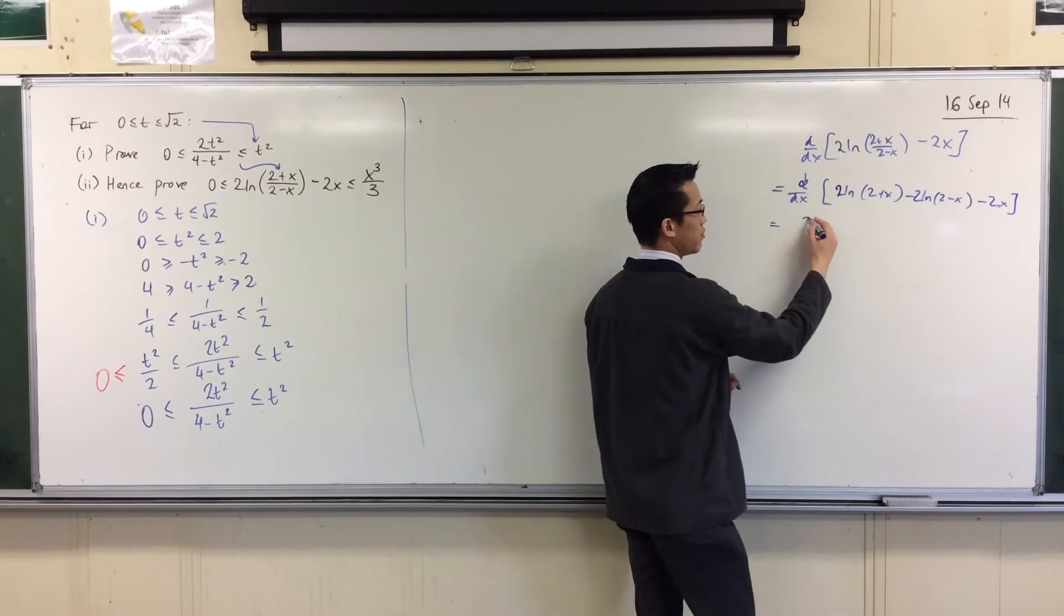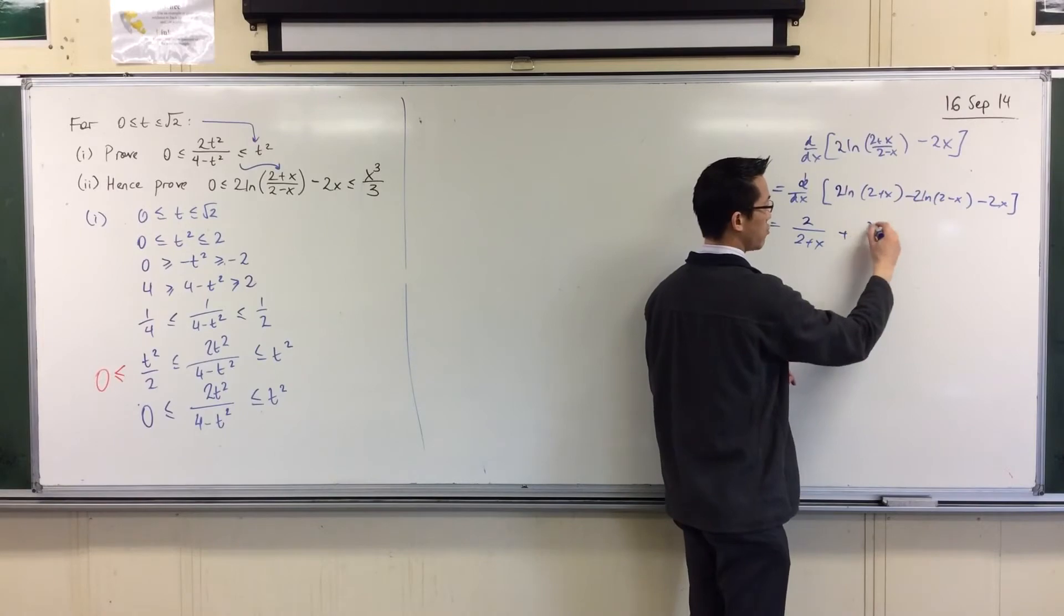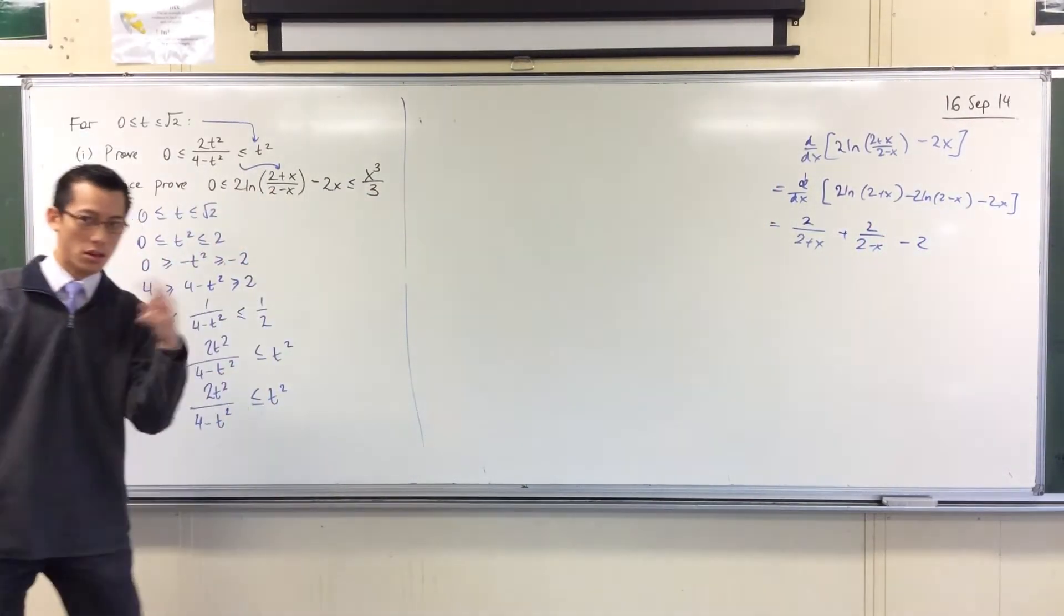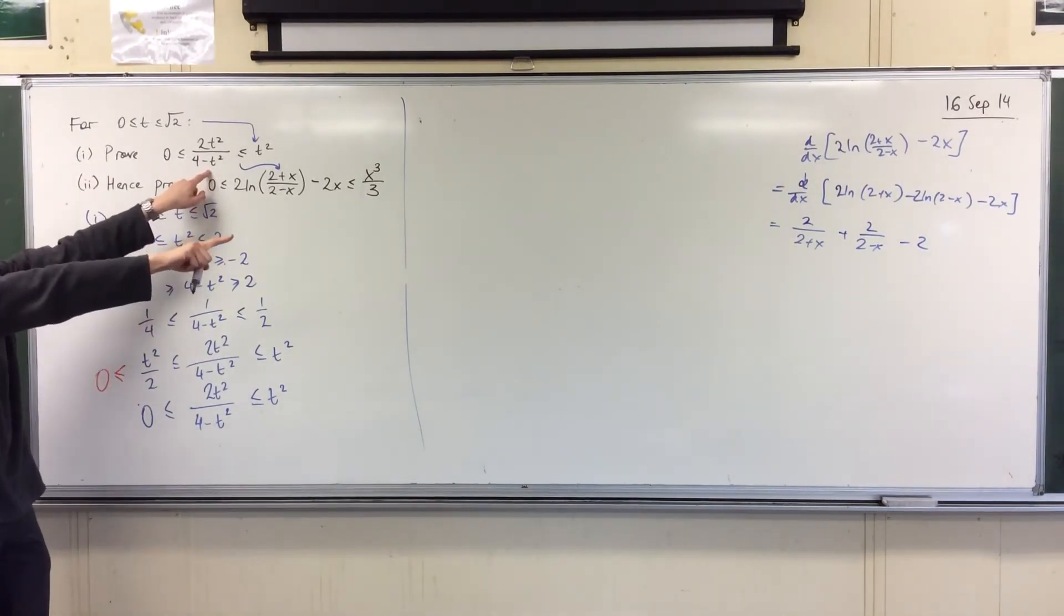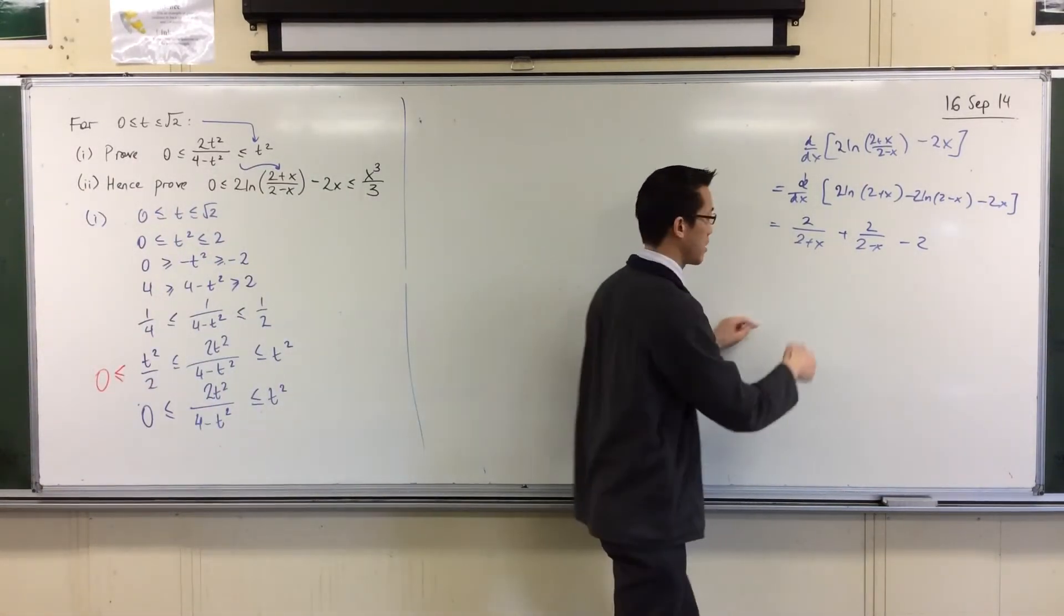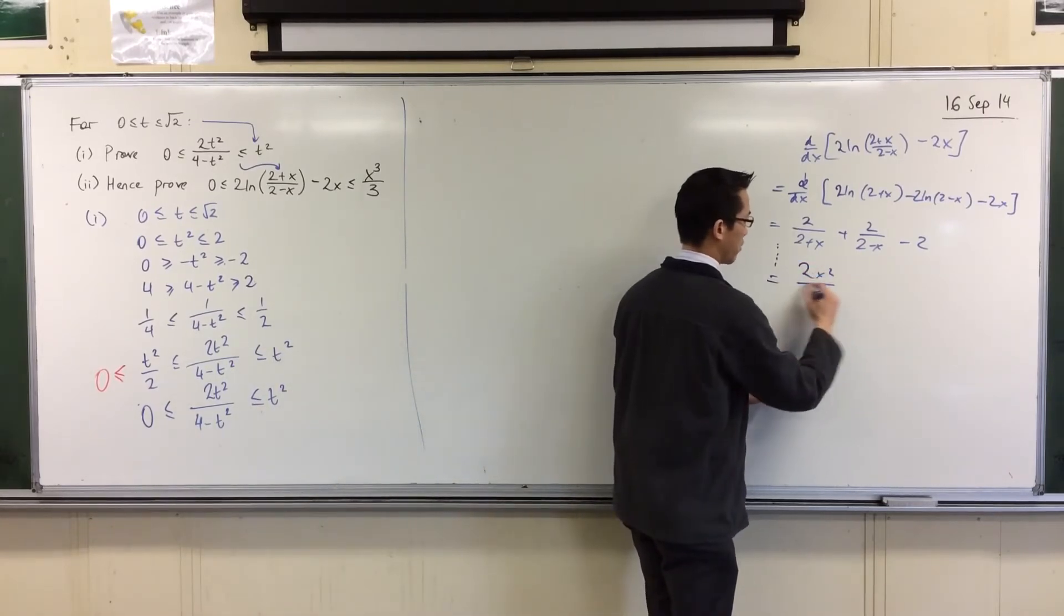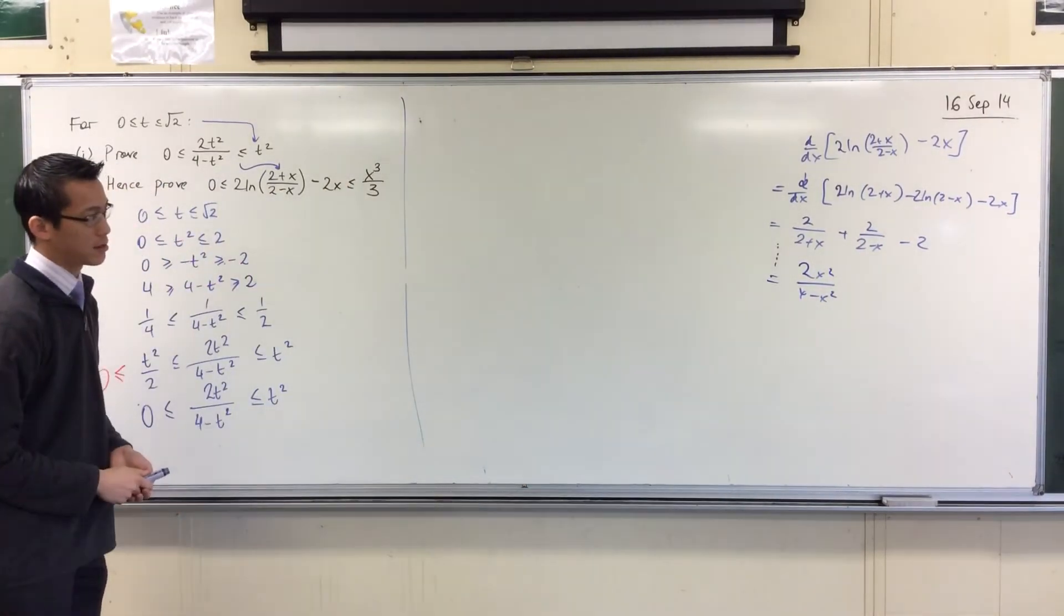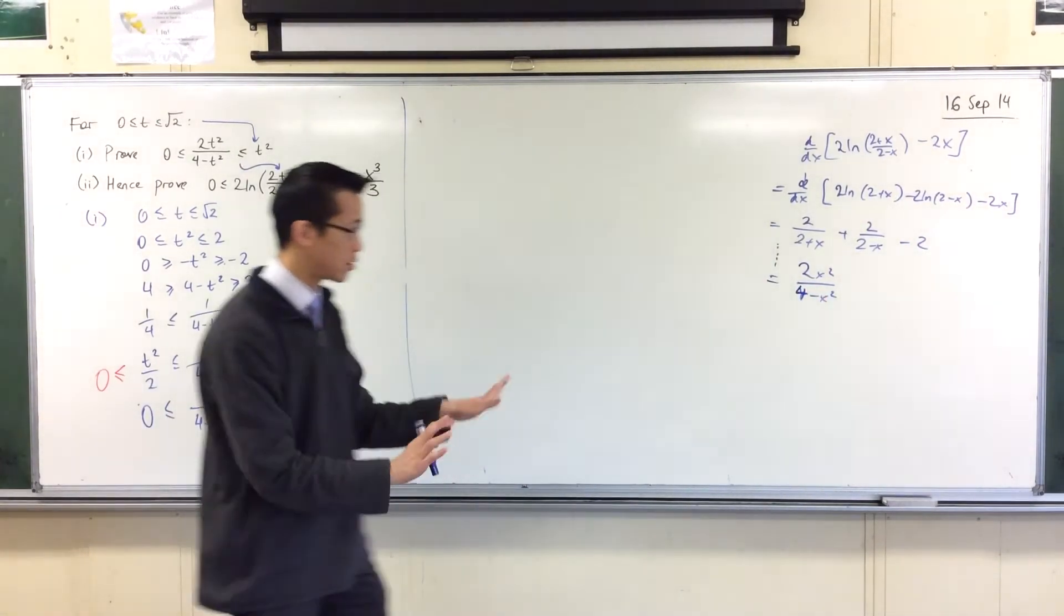And now you can differentiate and it's not so bad. So what are you going to get? You'll get 2 over 2 plus x from this. Double negative, so you'll get 2 over 2 minus x from this and you get 2 there. And now the cogs might start to turn and you can see where this is going to come from. What's this? What's this relationship to that? Yeah, that's right, it's partial fractions really. This is the difference of squares, right? So you can simplify this a little bit and content yourself that you end up with 2x squared on 4 minus x squared.